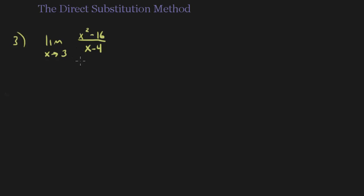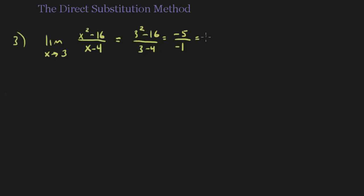In this example, we have another rational function. Notice the only value I can't plug in is when x equals 4. But that's not what I'm approaching, so I'm okay. We're going to plug in x equals 3. So we get 3 squared minus 16 over 3 minus 4. That's 9 minus 16, which is negative 7, over negative 1 — wait, that's negative 5 over negative 1, and that's going to be 5.